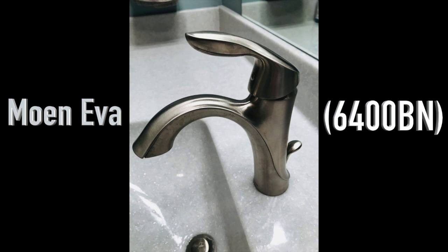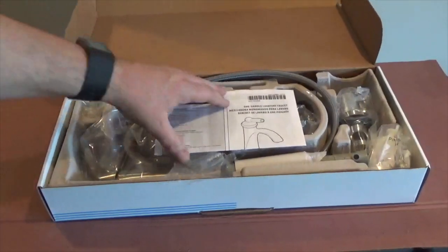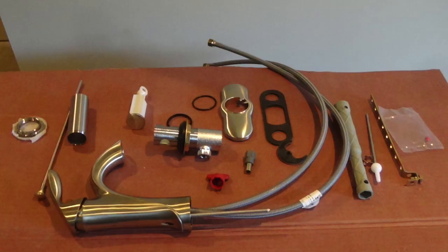This is the Moen one-handled laboratory faucet and drain kit. Begin by laying out all the pieces for easy access and identification.